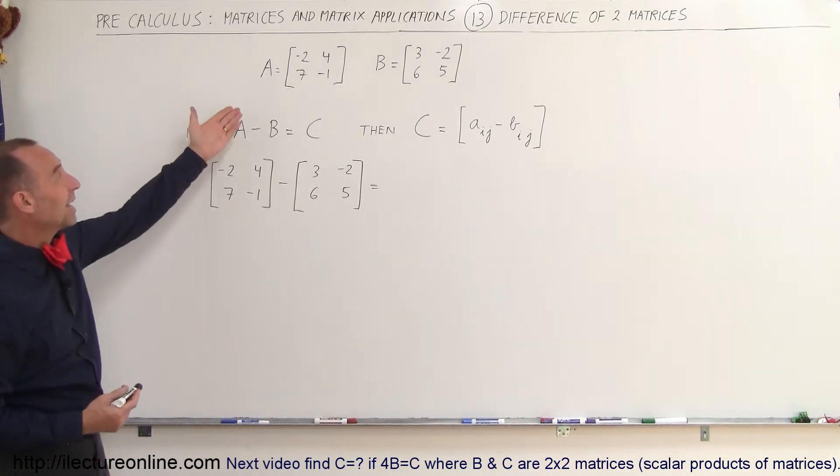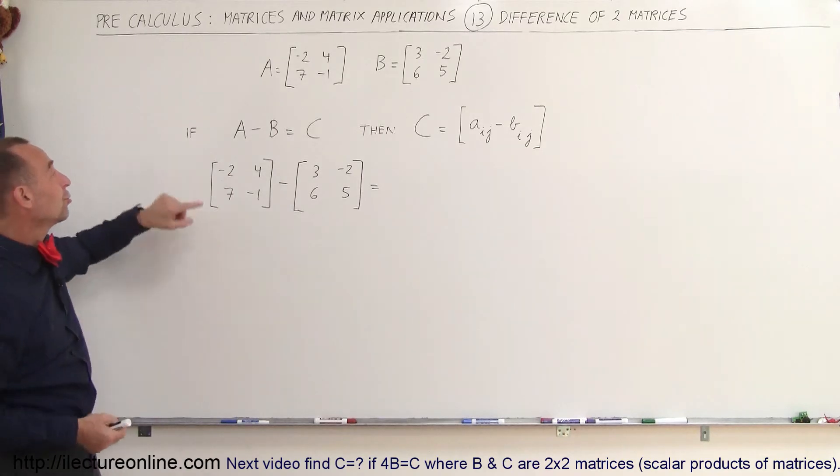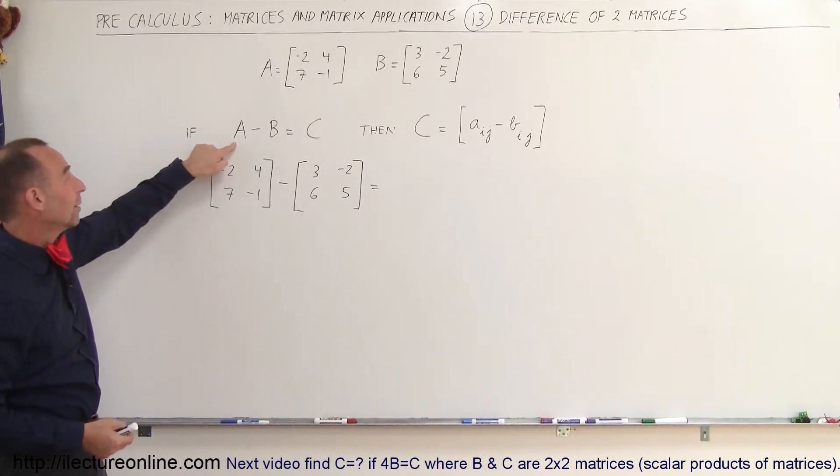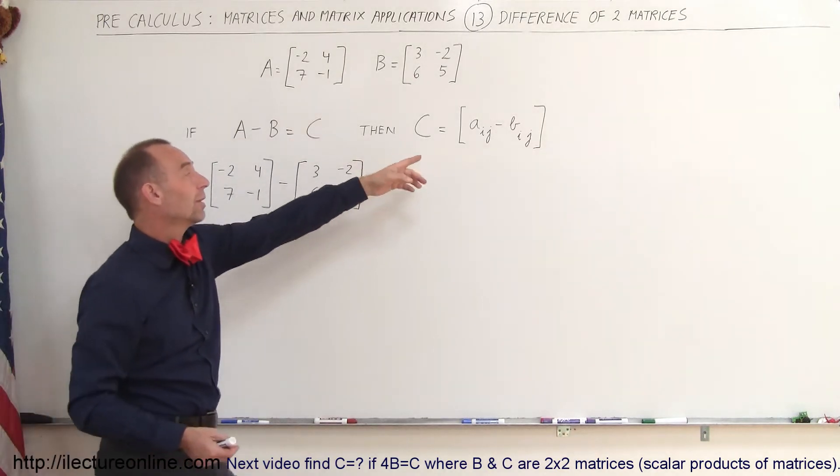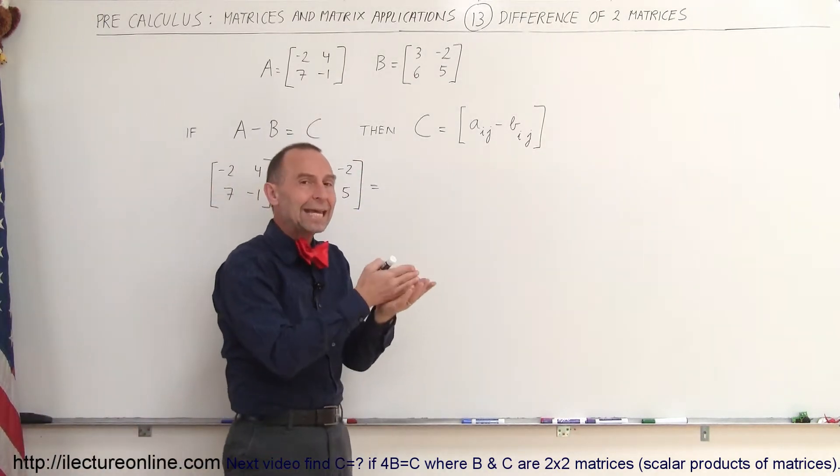So here we have two matrices, A and B, we're going to subtract them. And the general approach is if the matrix A minus B is equal to C, then C can be written as simply the difference of the elements between A and B.